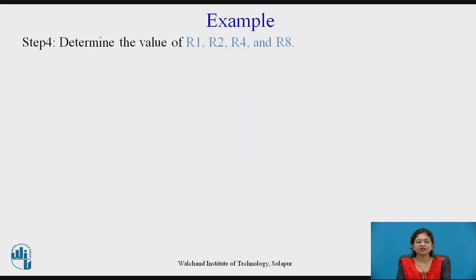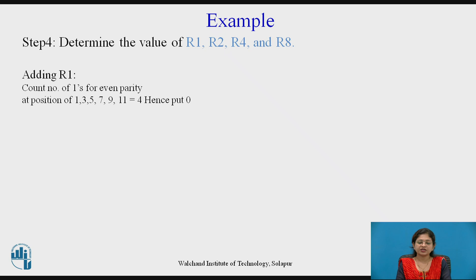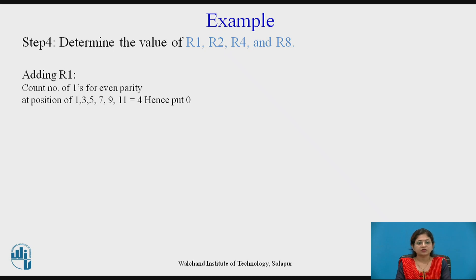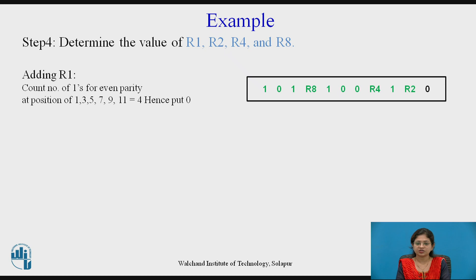Step 4: determine the values of r1, r2, r4, and r8. The redundant bit is calculated by counting the number of 1s at the specified positions. For even parity, if the count of 1s is even, place 0 as the redundant bit; if odd, place 1. At positions 1, 3, 5, 7, 9, and 11, there are a total of 4 ones — 4 is even, hence r1 equals 0.